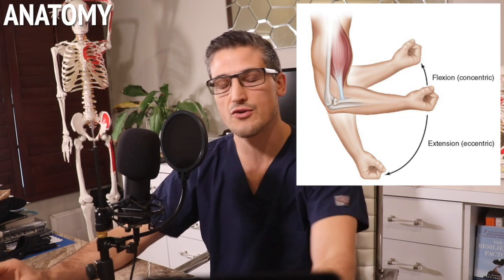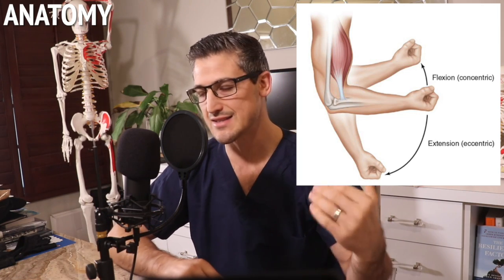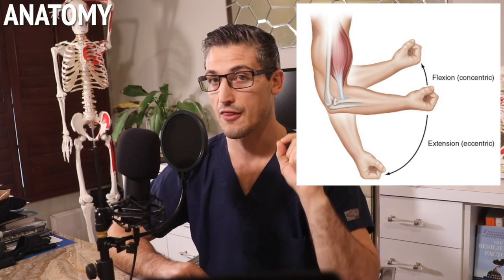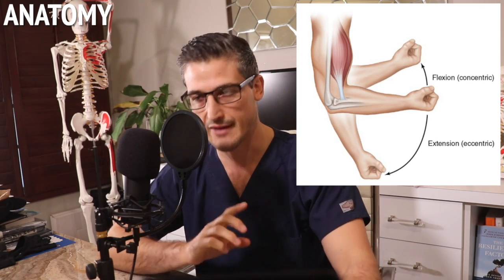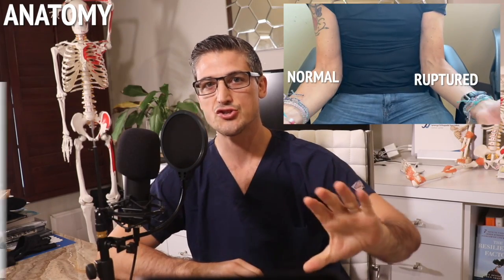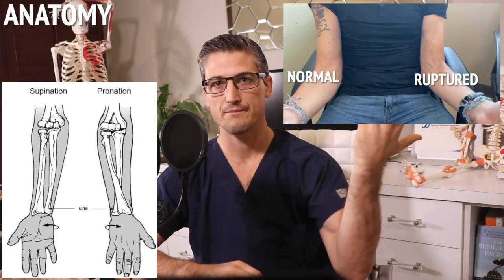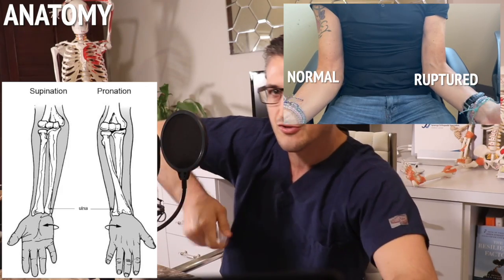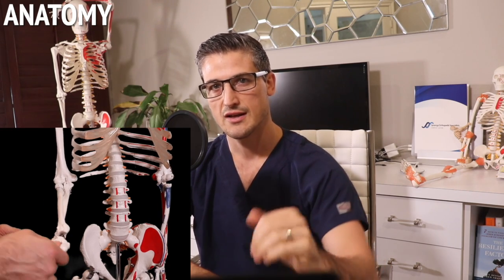Because the biceps crosses the elbow joint, it is an important elbow flexor, though it is not the most important — that would be the brachialis. Its most important function is supination of the forearm. Think of trying to tighten a screw with a screwdriver — that's the biceps. With a pronated arm, the biceps pulls on the radial tuberosity and the radius turns into supination. When the biceps relaxes, the arm can then go into pronation.